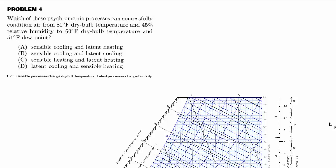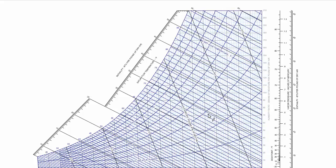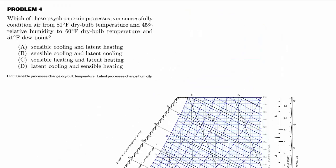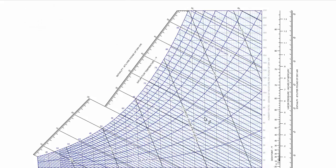So let's find those two points on the psychrometric chart. I've pasted one below. We're starting from 81°F and 45% relative humidity. It's about right there.